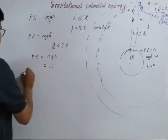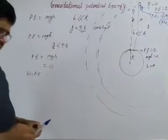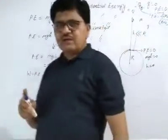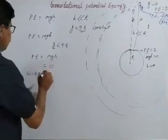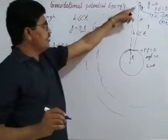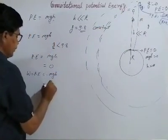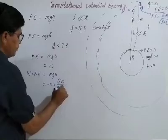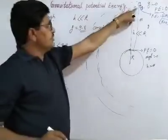To determine this potential energy, we know that work is nothing but energy, that is the potential energy. When we throw any object upward against the force of gravity, the total amount of work done is converted into potential energy. This equals minus mgh, and just below where g equals zero, we substitute the value of acceleration due to gravity as minus G m divided by (R + h) squared.